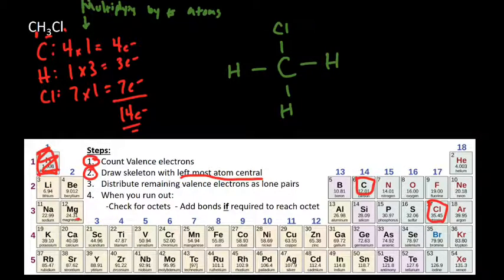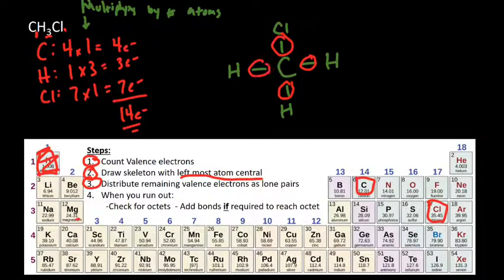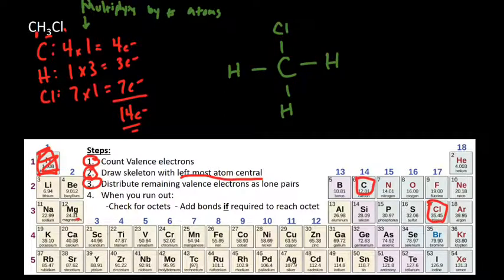Now we're on to step three: distribute the remaining electrons. We need to think about how many we've already distributed. We have four bonds, so that's eight electrons distributed. We have 14 total, so that means we have six more to distribute. Hopefully you remember that hydrogen wants two electrons, so hydrogen is not a place we're ever going to add lone pairs. For the other elements we can add lone pairs, and we're going to start on the outside and work our way inside — always add lone pairs to the outside elements first.